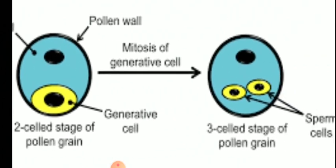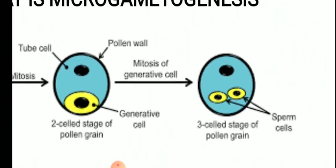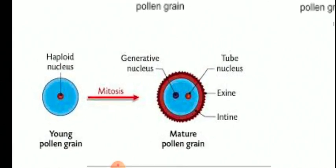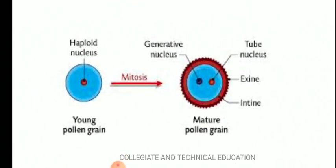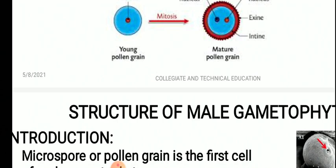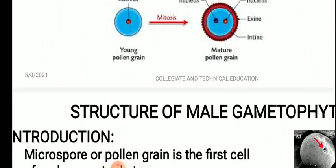Later, the generative cell undergoes one more mitosis to produce two non-motile sperms or male gametes. Microgametogenesis is the formation of a three-celled male gametophyte from the pollen grain. The pollen grain increases in size, producing an outer exine wall and inner intine wall. In the protoplasm, mitotic division produces generative and vegetative cells, and then in the pollen tube the generative cell undergoes one more mitosis to produce two sperms. This is the gist of microgametogenesis.